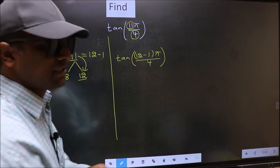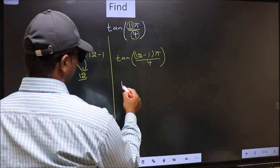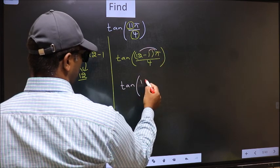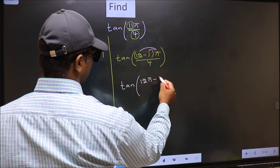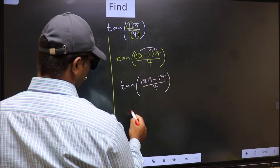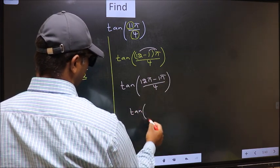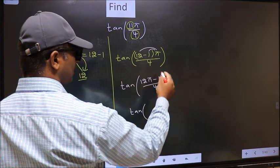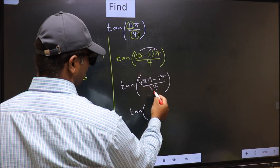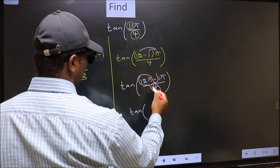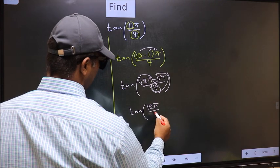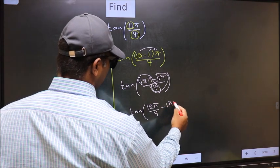Next, tan. Now you should open the brackets. You get 12π minus 1π by 4. Now tan, over here you should split the denominator in this way. That is 12π by 4 minus 1π by 4.